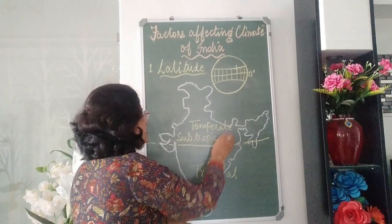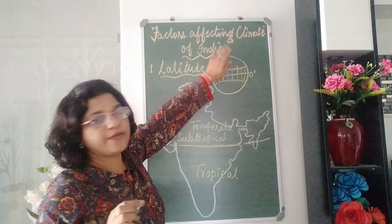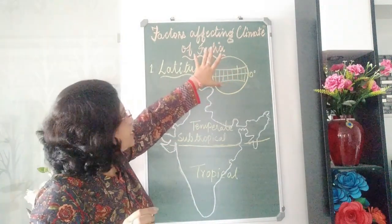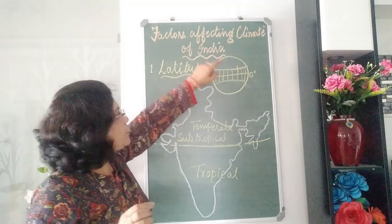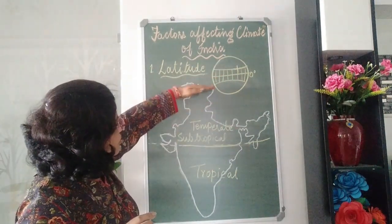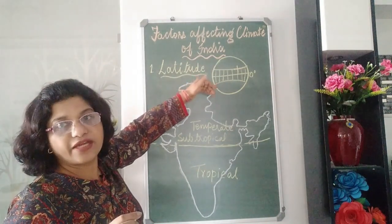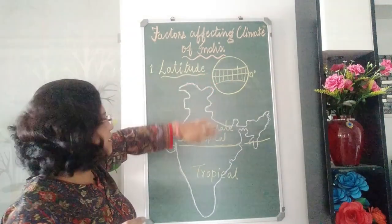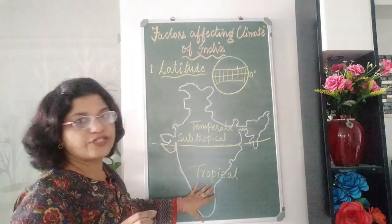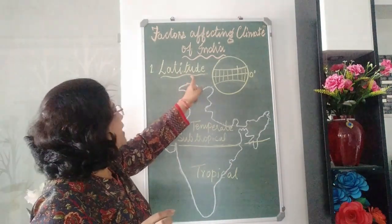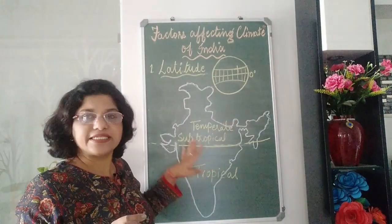As we move away from the equator, due to the shape of the globe, the temperature decreases. The upper part of India — north of the Tropic of Cancer — lies in the northern hemisphere, so the temperature gradually decreases. This part lies in the subtropical area, while the south lies in the tropical zone. That is how the latitudinal location of India affects its climate.